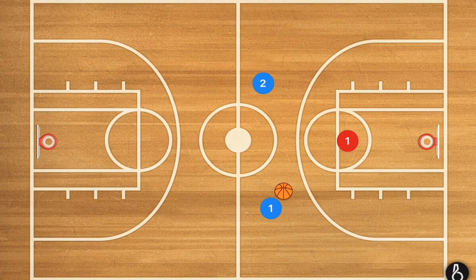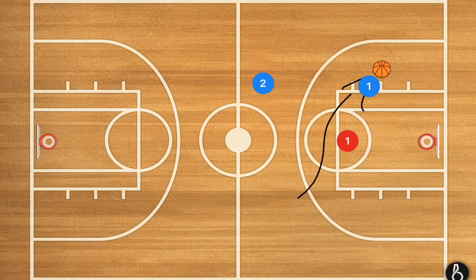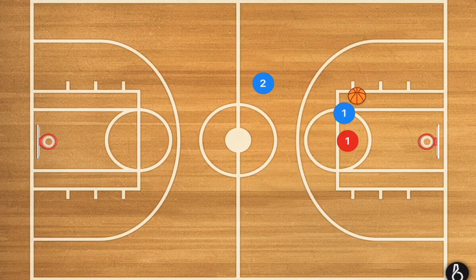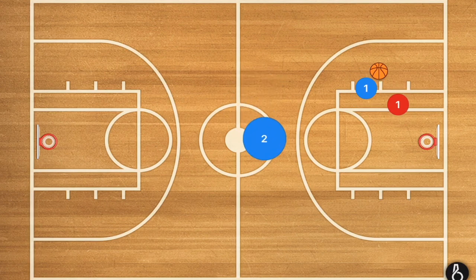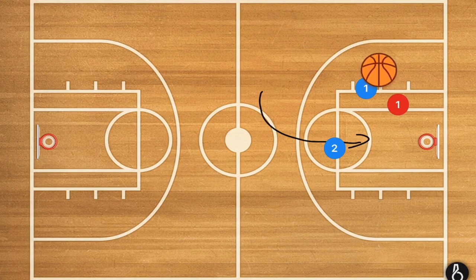However there are more advanced strategies that you can actually run. Number one is player one can cut across the key, roughly around the free throw line if not just a bit higher, and player two will then go down the middle of the key. By cutting across the key that's going to draw the defender with him, and then when player two cuts down the middle of the key that's when player one can send a pass or a drop pass over to player two for the layup.